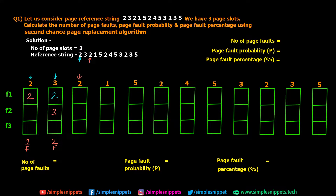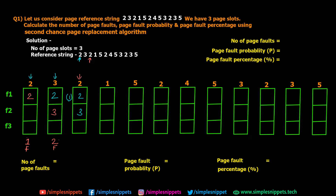Now page 2 is requested again. We already have page 2 in memory, so there is no page fault. However, since page 2 is repeated, we set its reference bit to 1. This means page 2 will get a second chance when it comes to replacement. So we assign reference bit 1 to page 2.